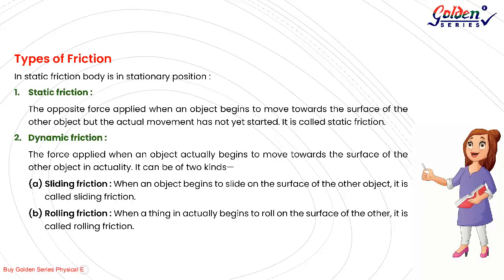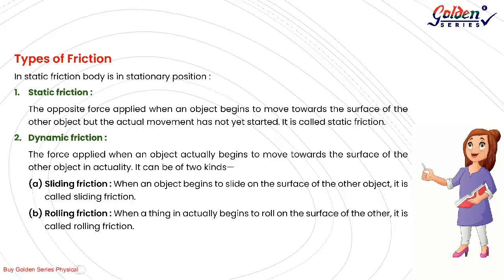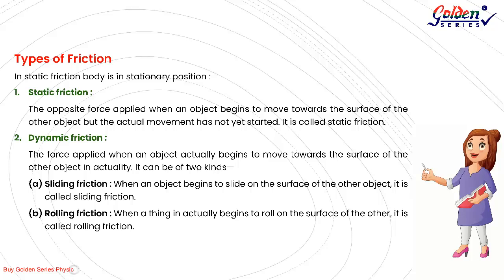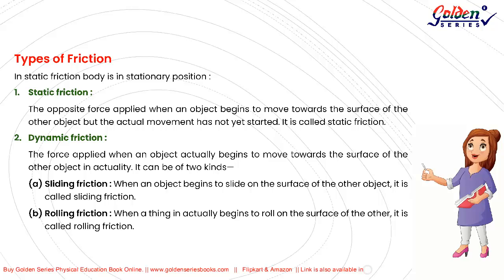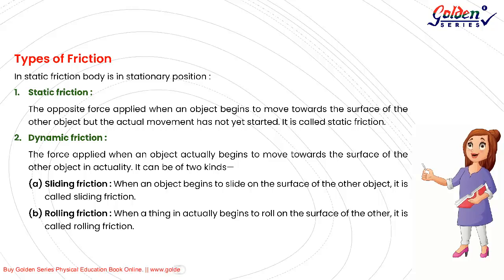Types of Friction. 1. Static Friction: the opposing force applied when an object begins to move toward the surface of another object but actual movement has not yet started — this is called static friction. 2. Dynamic Friction: the force applied when an object actually begins to move against the surface of another object. It can be of two kinds: A. Sliding Friction — when an object slides on the surface of another object; B. Rolling Friction — when an object rolls on the surface of another object.